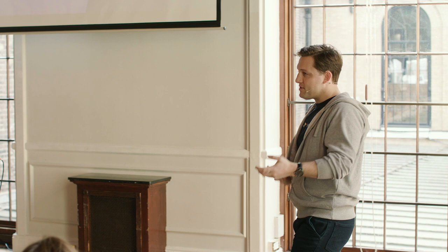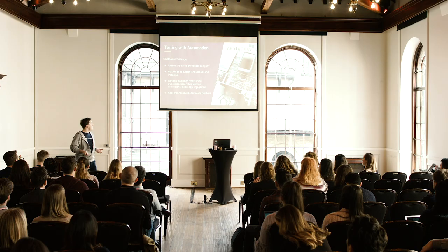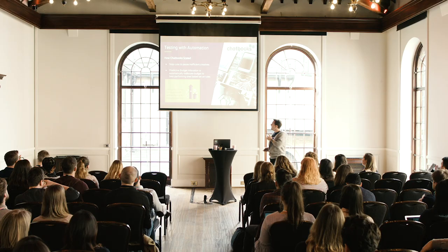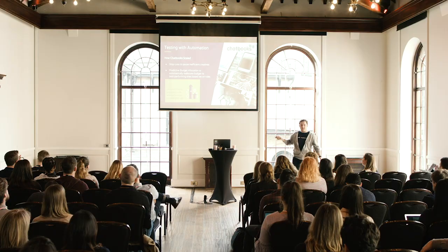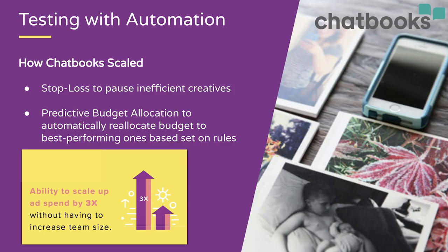One example is Chatbooks in the US, which takes pictures from your phone or Instagram and makes them into photo books. They wanted to improve their performance on Facebook and Instagram. One thing we set up for them was a stop-loss trigger — if you're spending too much and costs are too high, it stops spend on those ads and ad sets. By integrating these different triggers and setting limits for their tests, they were able to improve their performance and scale effectively.